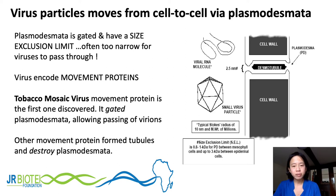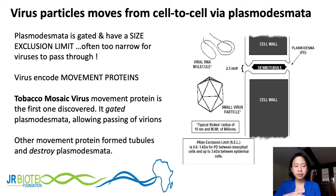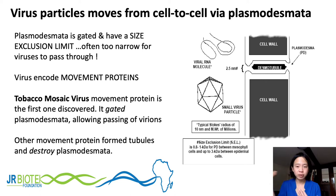Plasmodesmata are fixed in size and only allow molecules of a certain size to pass through. Viruses are smart — they encode what we call movement proteins. Tobacco mosaic virus movement protein was one of the first discovered; it gates the plasmodesmata, essentially holding them open and allowing the virus to pass through. Other viruses encode different types of movement proteins that form tubules and destroy plasmodesmata, also allowing the virus to pass through.